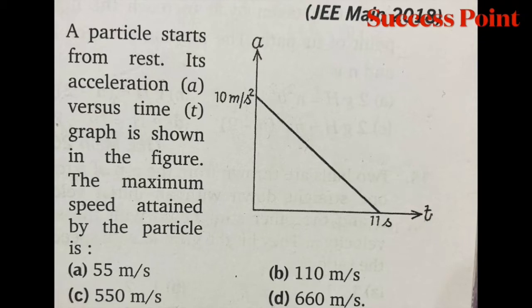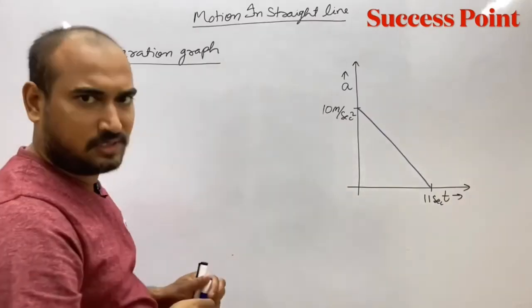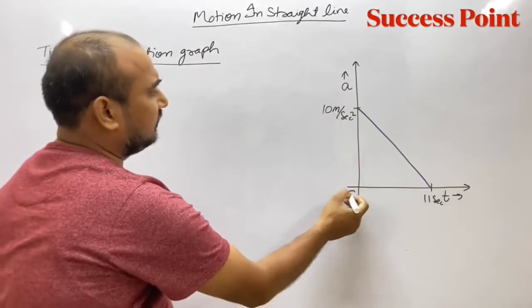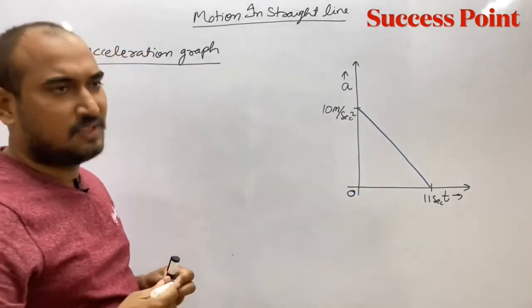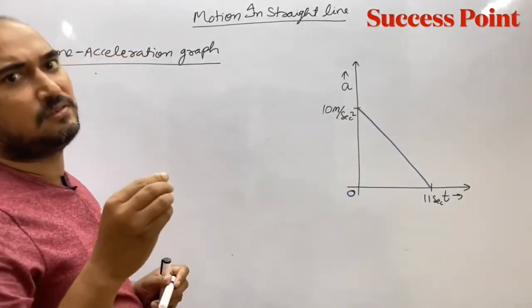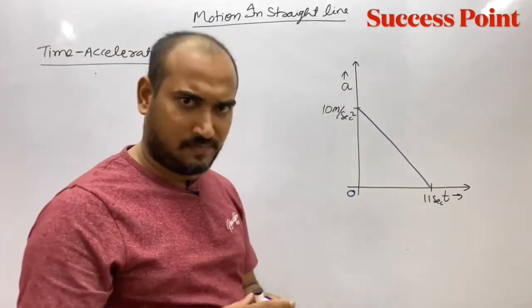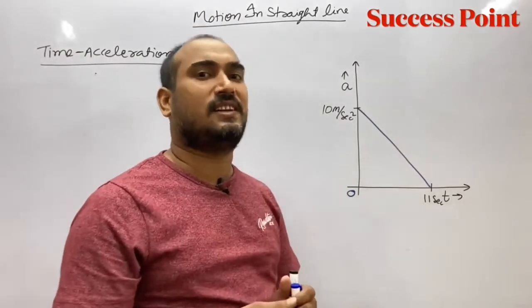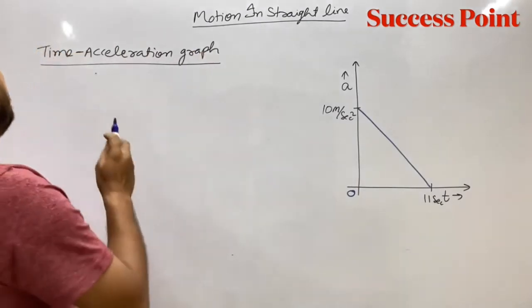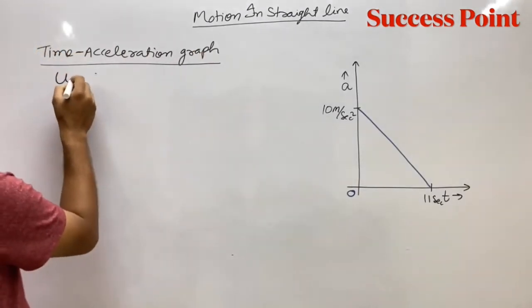We are given an acceleration-time graph. It says the body starts from rest. When an object starts from rest, what is its initial velocity? Zero. When the body starts from rest, rest means initial velocity is zero.